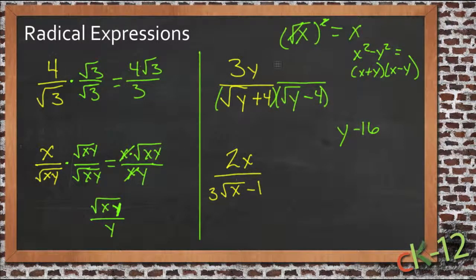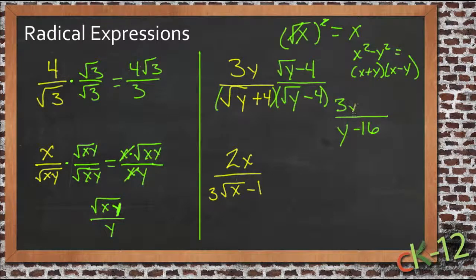Then we just need to multiply the top by the square root of y minus 4, and we get 3y roots of y, and negative 4 times 3, or negative 12 y.